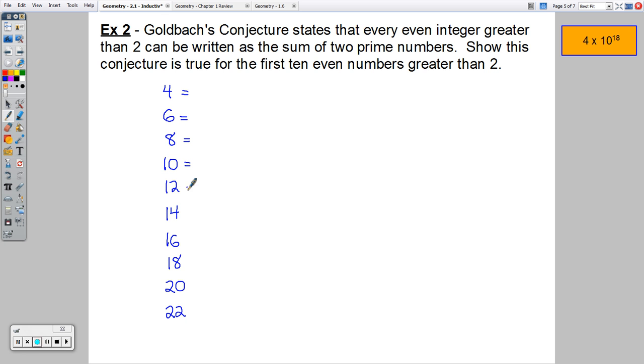Think of some prime numbers that add to four. Two is a prime number because only one times two equals two. So two plus two would work. For six, three and three are both prime numbers. So I could add three and three. I've showed it to be true for the first two cases. We've got three plus five for eight. Five plus five would work for 10. You could also do three plus seven.